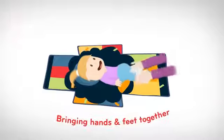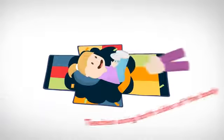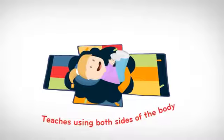By bringing Charlotte's hands and feet together, this is a really good position for symmetry, and it's teaching Charlotte to use both sides of her body together.